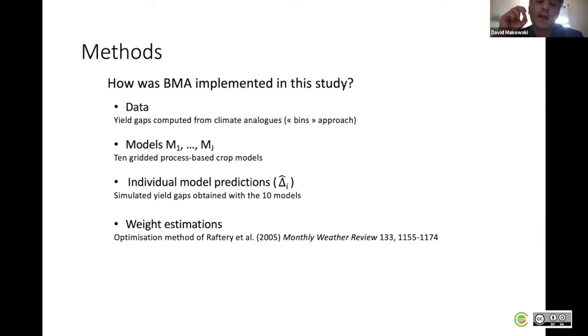The weight estimation was done through an optimization procedure to estimate the weight maximizing the likelihood. We give a stronger weight to the process-based crop models showing a good quality of fit to the climate analogue yield gap estimates.